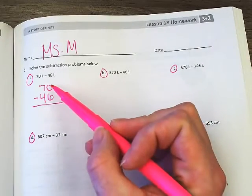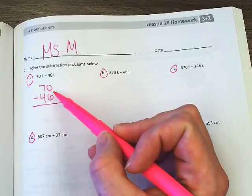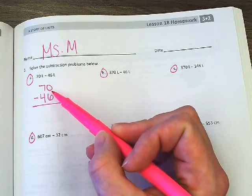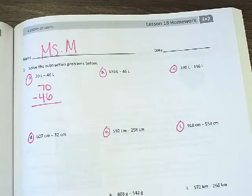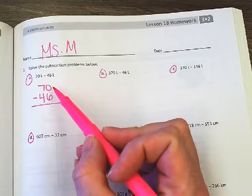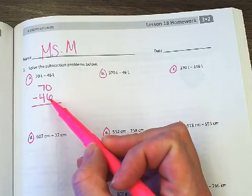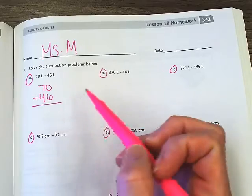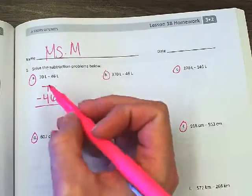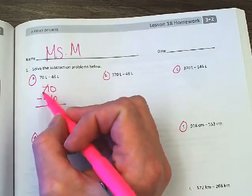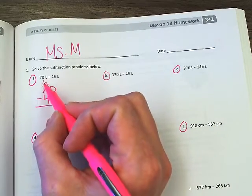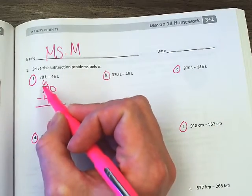Remember, we're starting at the top and saying zero minus six. We're not saying six minus zero. Zero minus six: if I have zero dollars, can I buy something that costs six dollars? Absolutely not. There is more on the floor, go next door, so we have to borrow. This seven, we're going to borrow from it. What's one less than seven? Six, it turns into a six.